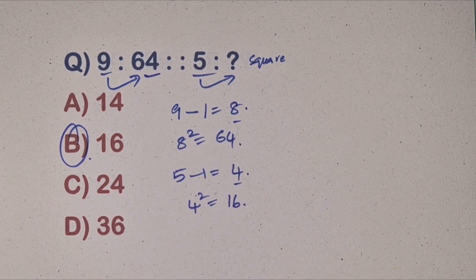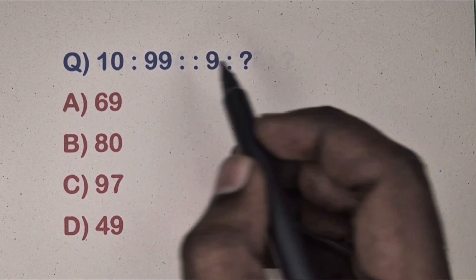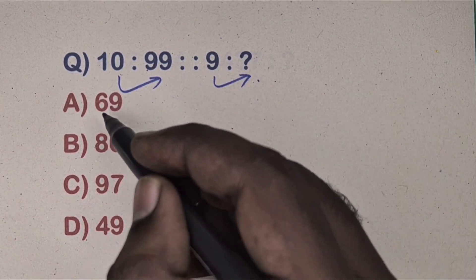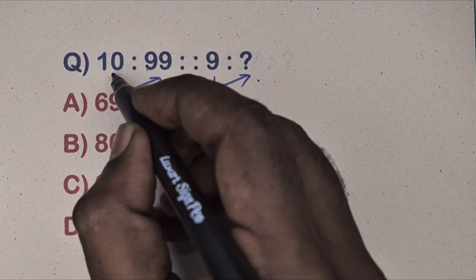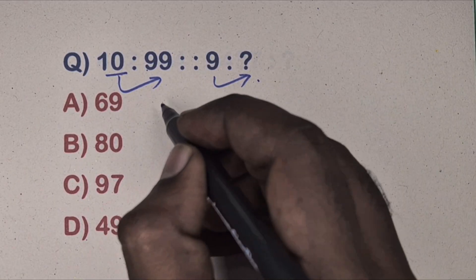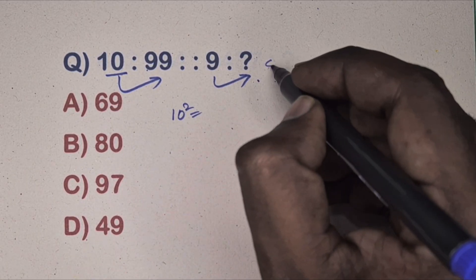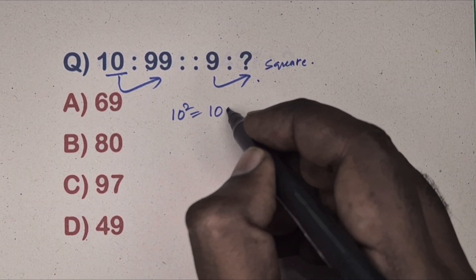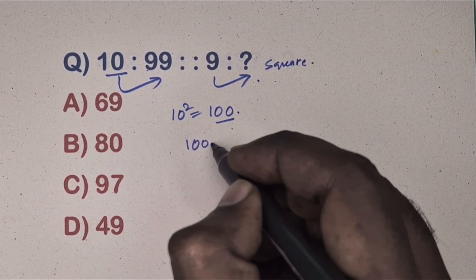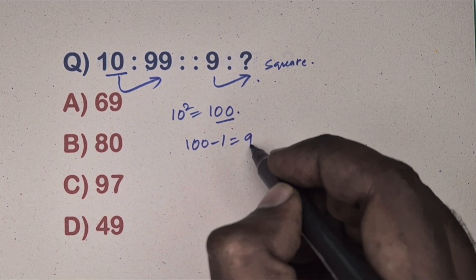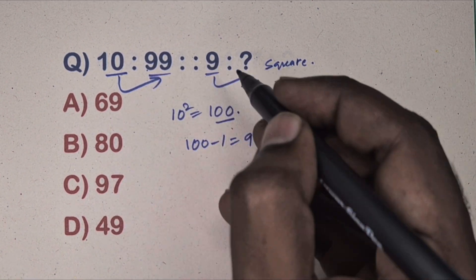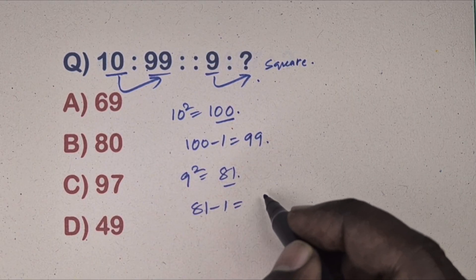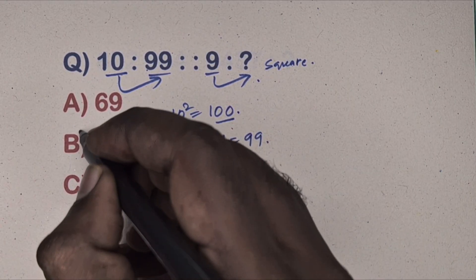Next question: 10 is related to 99, and 9 is related to which number? Options are given. This is a square relation. Take 10 — 10 squared equals 100, then 100 minus 1 equals 99. Same way, take 9 — 9 squared equals 81, then 81 minus 1 equals 80. Option B is the correct answer.